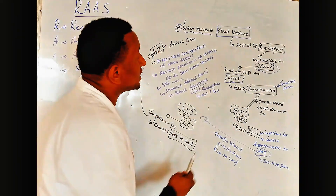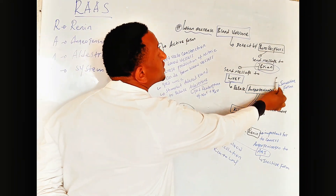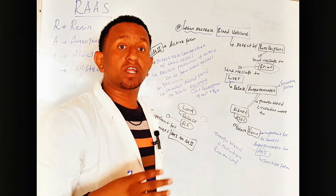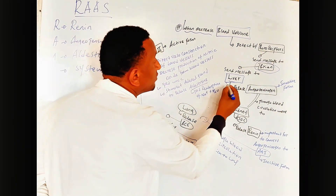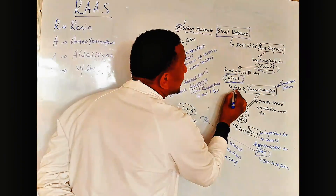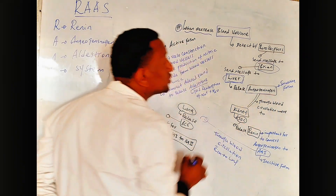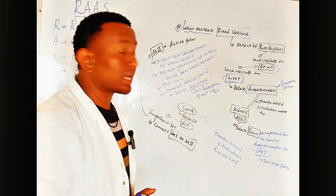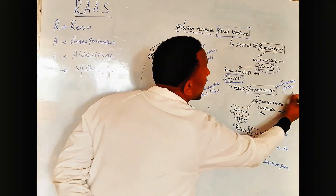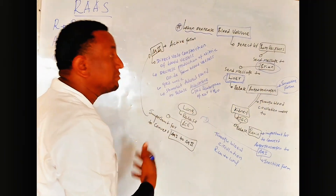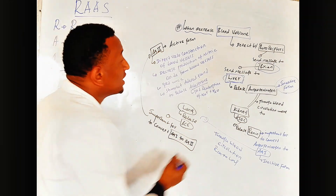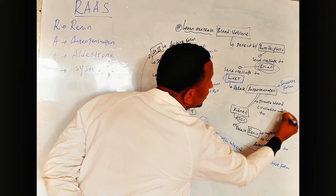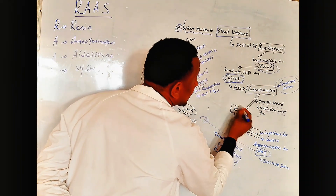When the liver receives the message from the brain, the brain stimulates the liver. The liver releases angiotensinogen into the body. This angiotensinogen is in inactive form. Through blood circulation, the angiotensinogen reaches to the kidney.